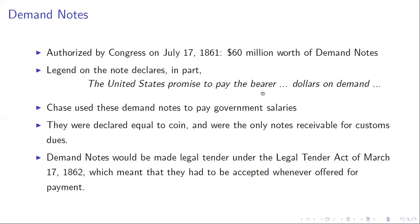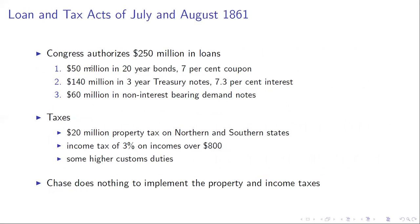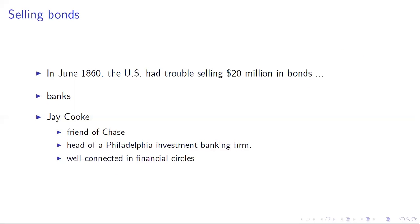Congress is supposed to issue $190 million in new bonds and $60 million in demand notes. Recall that in 1860, the U.S. had trouble selling $20 million in bonds. They first try to go to the banks to see if they'll buy these bonds, with mixed success. Solomon Chase then enlists his friend Jay Cook, a well-connected Philadelphia banker, to go and market these bonds in a campaign.